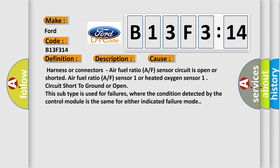This diagnostic error occurs most often in these cases: Harness or connectors - Air Fuel Ratio (A/F) sensor circuit is open or shorted. Air Fuel Ratio (A/F) sensor 1 or heated oxygen sensor 1 circuit short to ground or open. This subtype is used for failures where the condition detected by the control module is the same for either indicated failure mode.